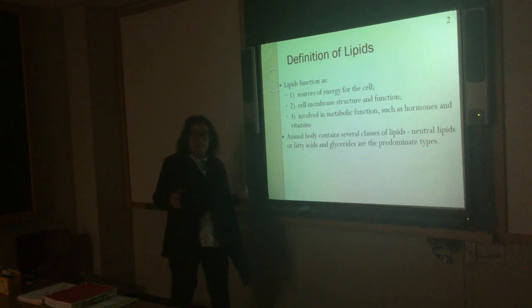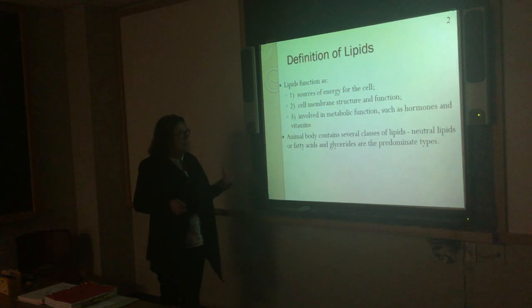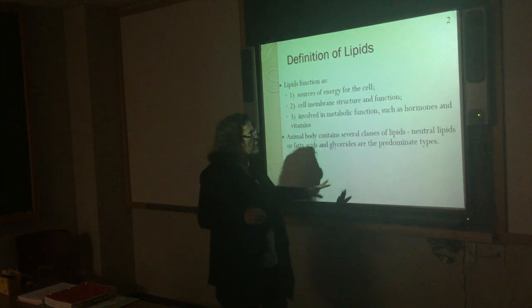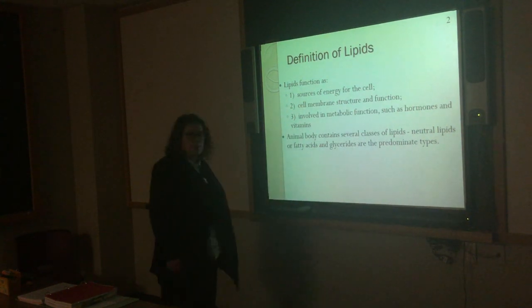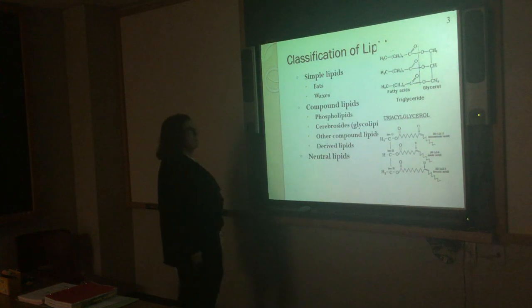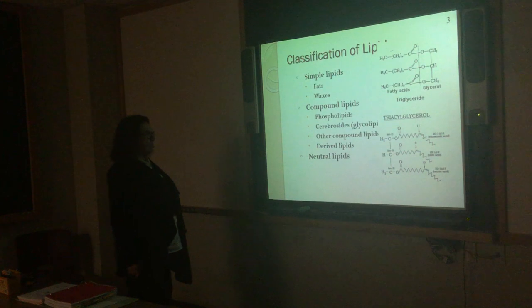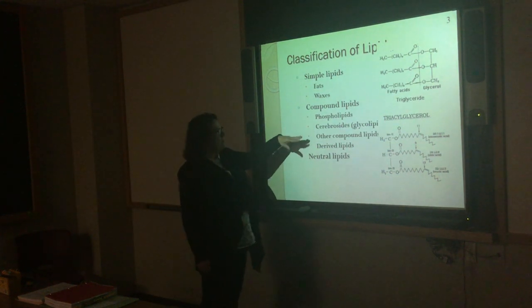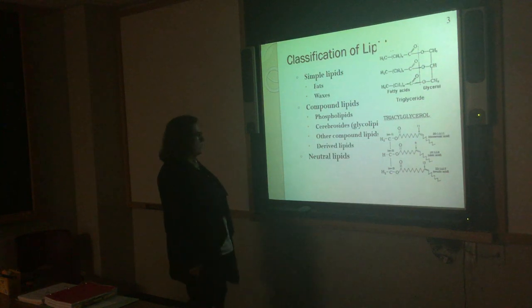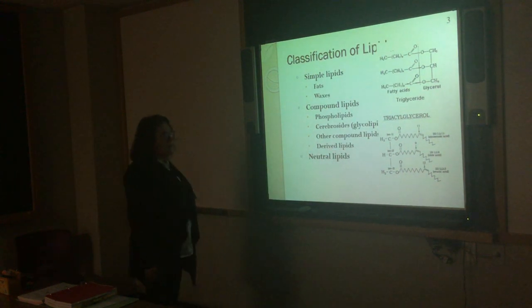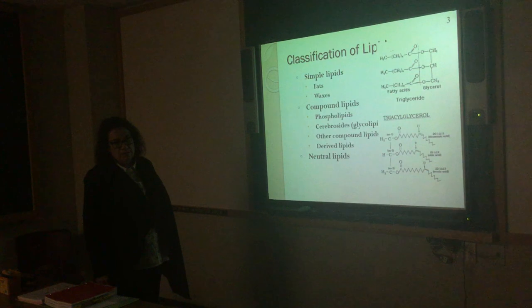If you look at a mammalian animal body, it contains several classes of lipids. It has neutral lipids — fatty acids and glycerides — and some other types of lipids. But in meat, we really deal with the neutral lipids because we're not going to deal with the hormones and those types of things. Simple lipids are fats and waxes. There are also compound lipids such as phospholipids, cerebrosides, and other compounds, and derived lipids. But in meat, 99% of the lipids are neutral lipids.